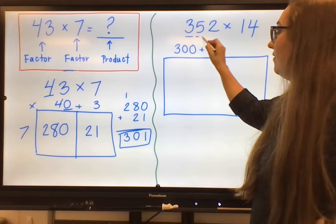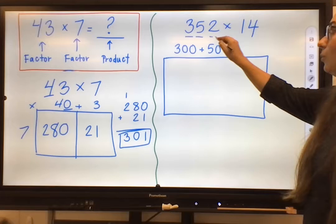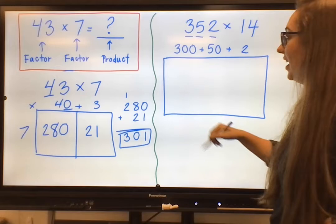And then put a little plus symbol to show that we are going on to our next place value. I have a 5 in the tens place. That tells me that there are 50 in this number, 352. So 50. Finally, that last little addition symbol, we're moving on to our ones place. There's just two ones, so I'd write 2.